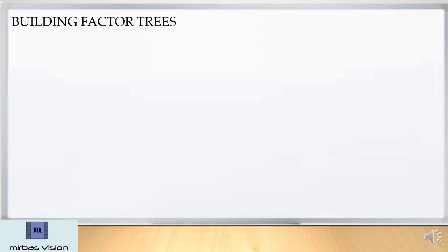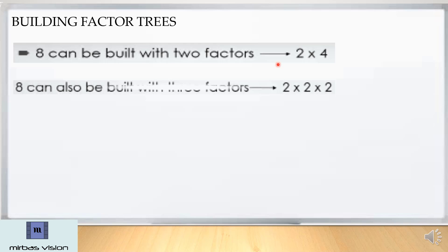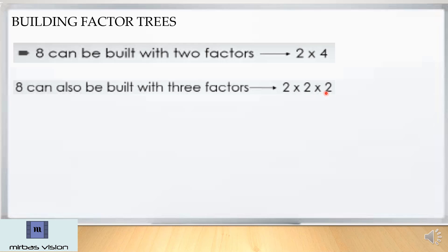Many numbers can be built by multiplying more than two factors. For example, I am taking 8. 8 can be built with two factors: 2 into 4. It can also be built with three factors: 2 into 2 into 2, which means 2 into 2 is 4, and 4 into 2 is 8.